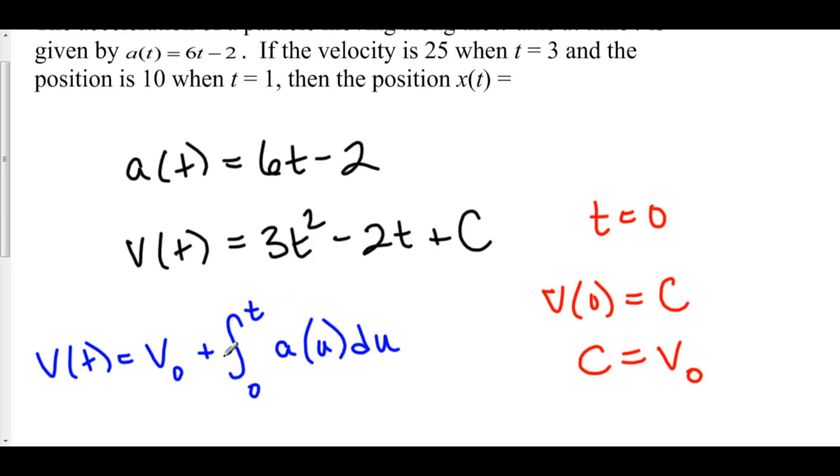Well, this is in fact net change, where here is my antiderivative from zero to t of a(u) du, and of course I'm using a different variable u because I can't have the same t in there as well. That would make no sense. Plus my initial velocity right here.